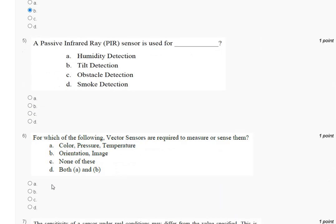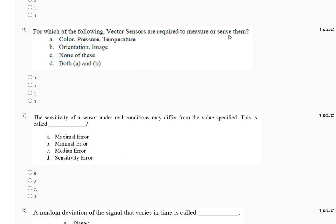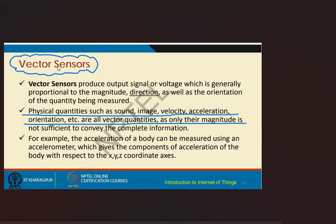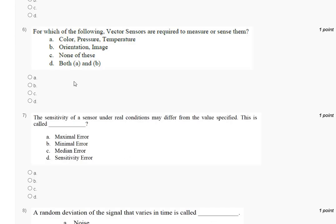Question six: which of the following vector sensors are required to measure? Options are: first, color, pressure, temperature; second, orientation, image; third, none of these; fourth, both A and B. Vector sensors measure physical quantities such as sound, image, velocity, acceleration, orientation, etc., which are all vector quantities. The correct answer to question six is option B.